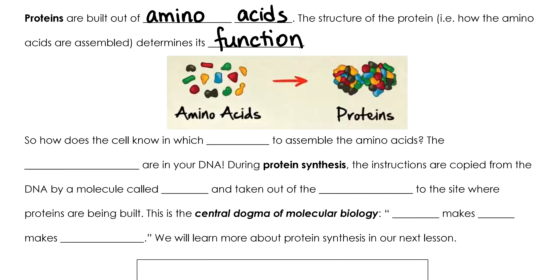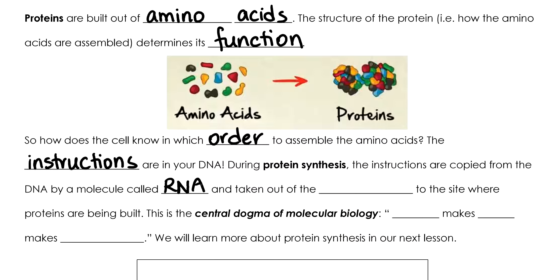If amino acids are not assembled in the correct order or orientation, the protein will not work. So who tells the cell how to assemble these proteins? The instructions for how to do this are stored in your DNA. During a process called protein synthesis, these instructions are copied out of your DNA by a molecule called RNA. RNA then takes this copy of the instructions outside the nucleus to the site where proteins are put together. This is called the central dogma of molecular biology and can be summarized as: DNA makes RNA makes protein.